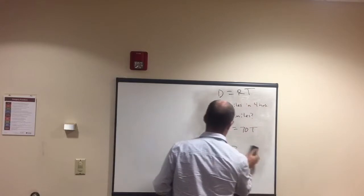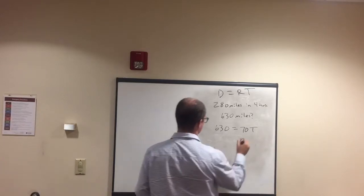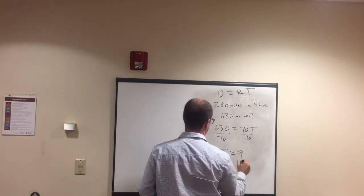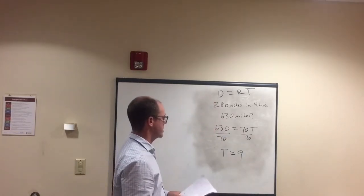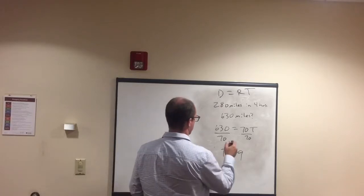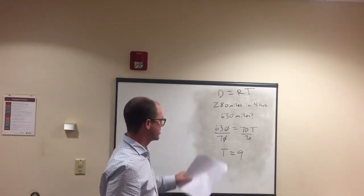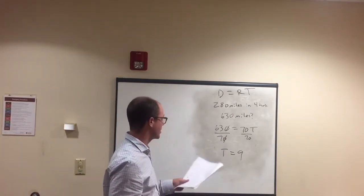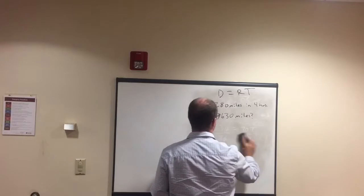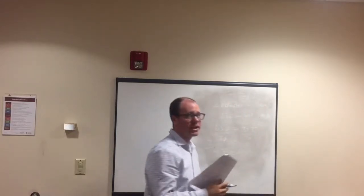We divide each side by 70 and time equals nine hours. You can simplify 630/70 by crossing out the zeros and doing 63 divided by 7, which equals nine. So the answer is nine hours. You will see distance equals rate times time questions on the test.